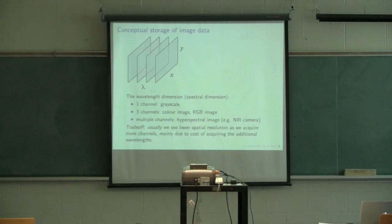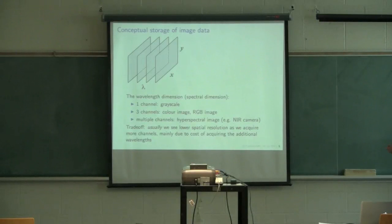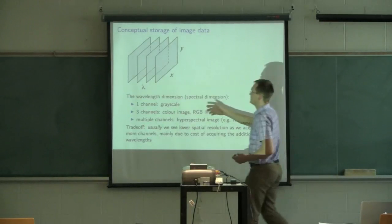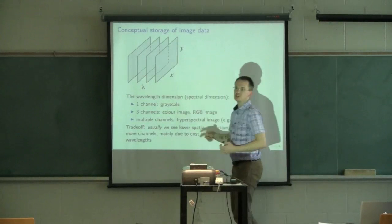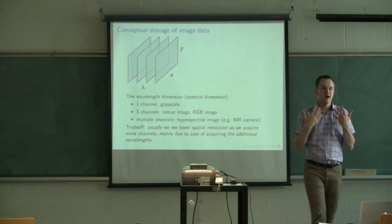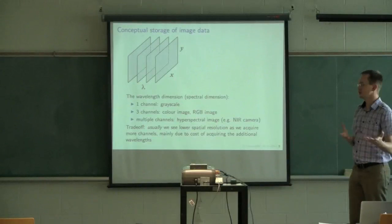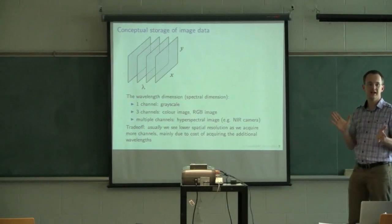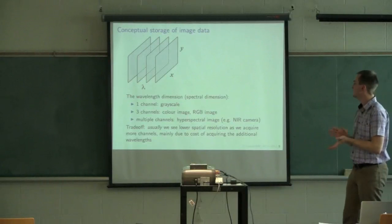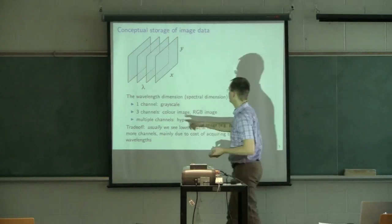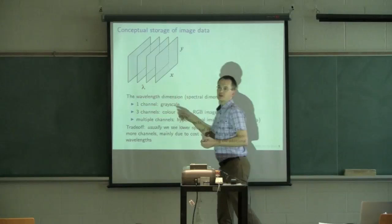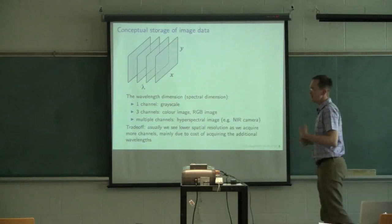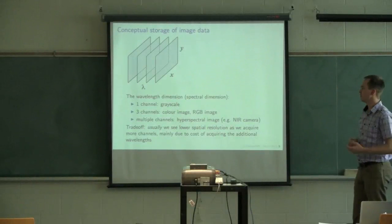To understand today's class, we need to understand how image data is stored and what it looks like. We consider data as a three-dimensional cube: the X and Y dimensions represent the scene seen by the camera — the spatial dimensions — and the spectral dimension lambda corresponds to wavelengths such as red, green, or blue.